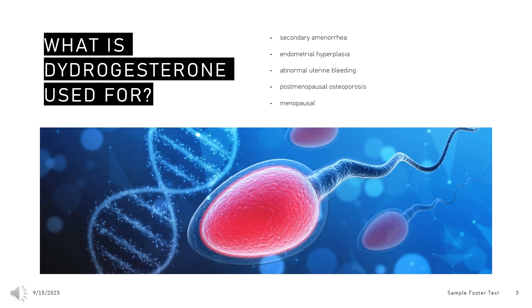Oral tablets containing MPA and conjugated estrogens are indicated to prevent postmenopausal osteoporosis, and to treat moderate to severe menopausal symptoms such as vasomotor symptoms, vulvar atrophy, and vaginal atrophy.